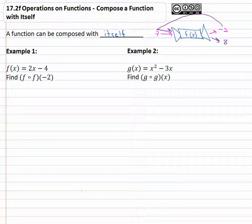So for example, if f of x is 2x minus 4 and we're asked to find f of f of negative two, what that's really asking us to find is f of f of negative two. That means we're going to find out, starting in the parenthesis, what is f of negative two, and we'll plug that result into the f.